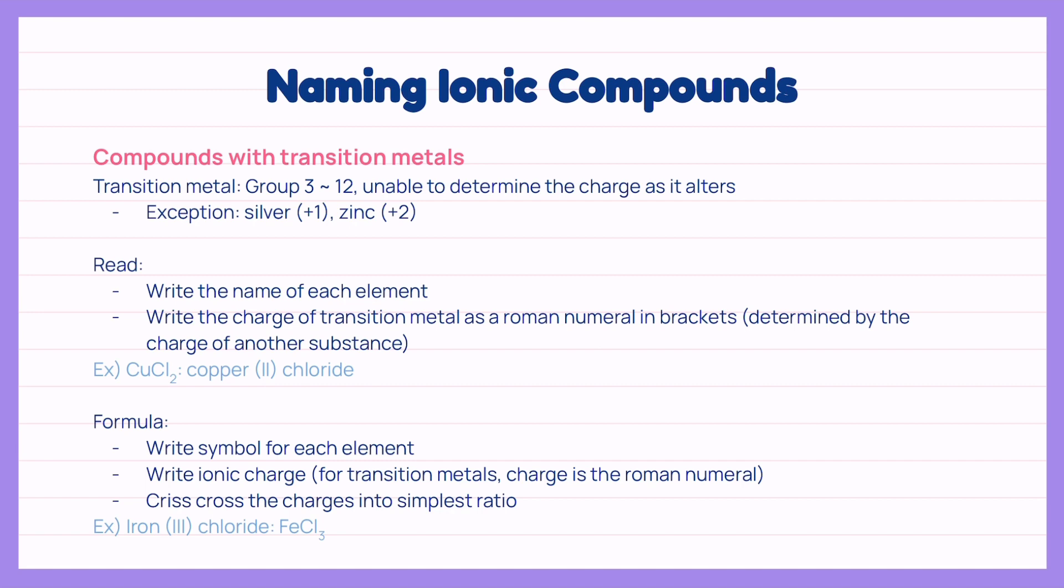For these compounds, we start with writing the name of each element and write the charge of transition metal as roman numerals in brackets. This would be better understood with an example. For example, CuCl2 is made out of copper and chloride.